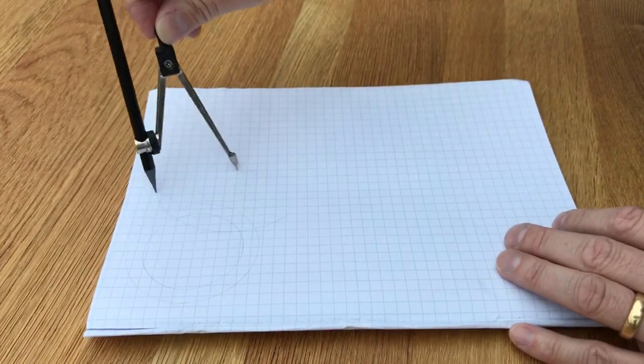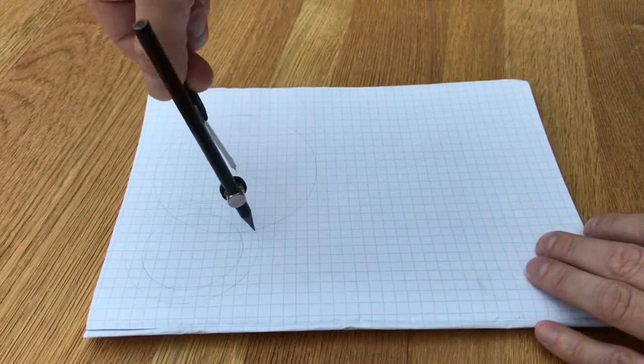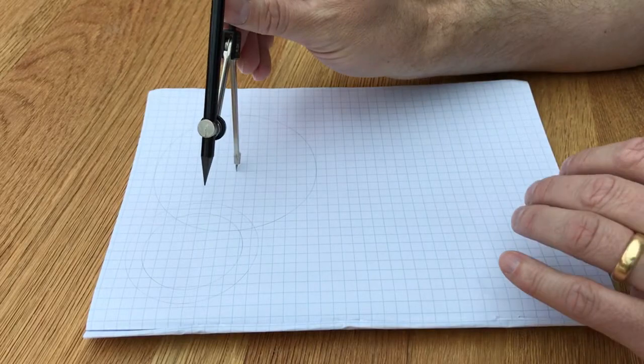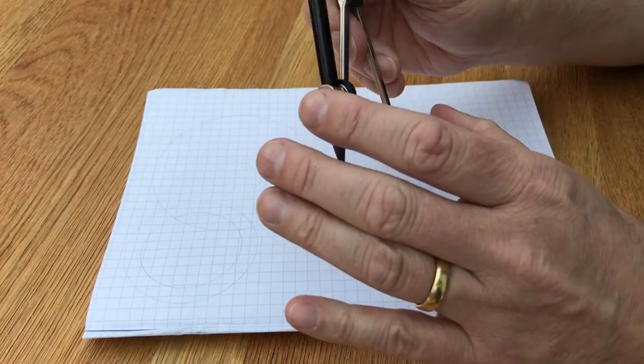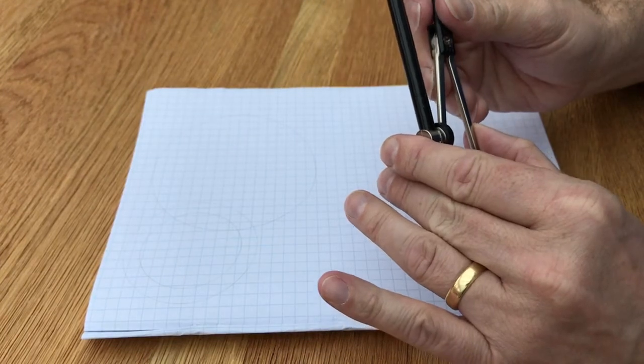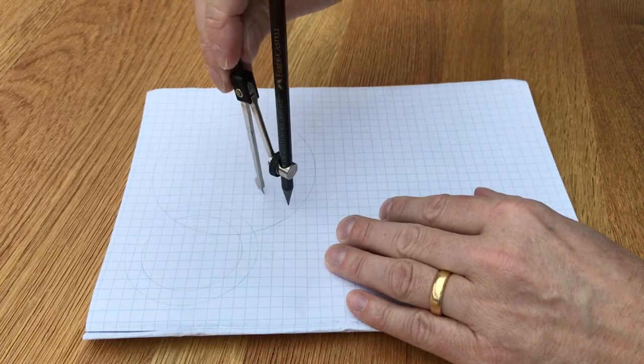Draw a number of different sizes, doesn't matter if they overlap. This is just practice. Try and keep nice and smooth and an even weight on your pencil. There we go, some nice accurate circles. They do tend to get a little bit harder if you get really small.